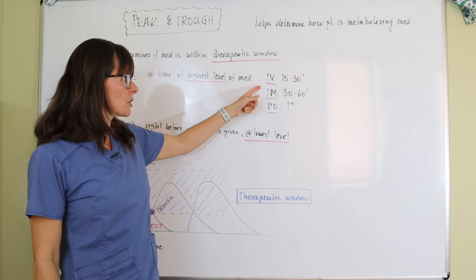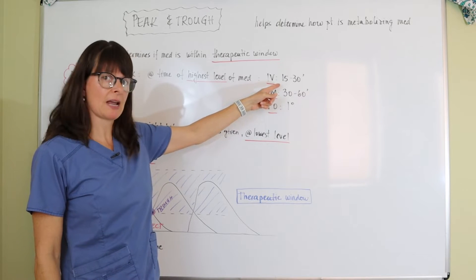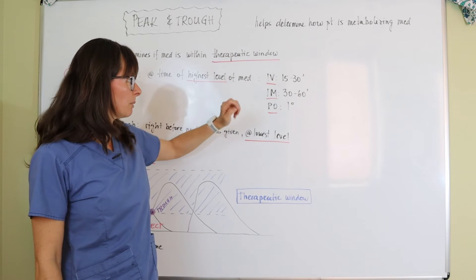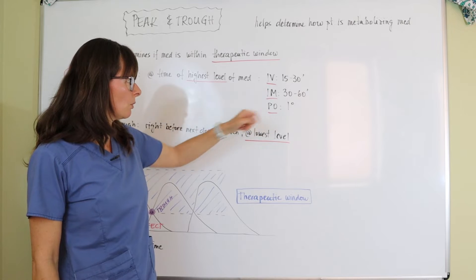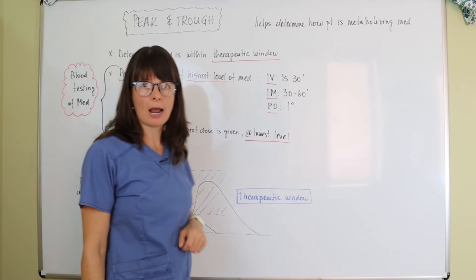And that is very similar to the time ranges that we typically reassess our patients for medication side effects. So for IV administration, it would be 15 to 30 minutes after the infusion is completed. For IM, 30 to 60 minutes after, and for PO about one hour after.